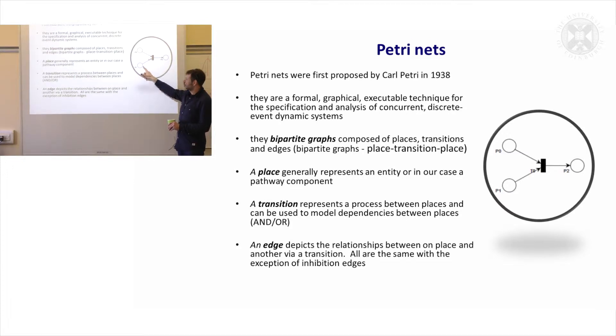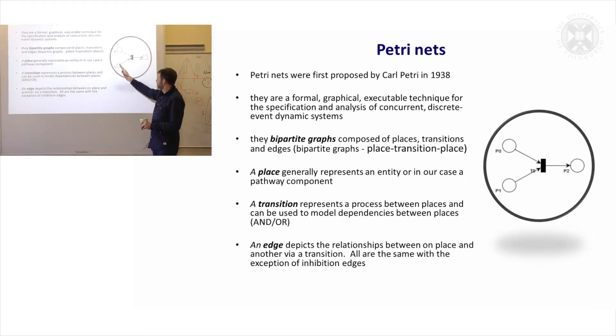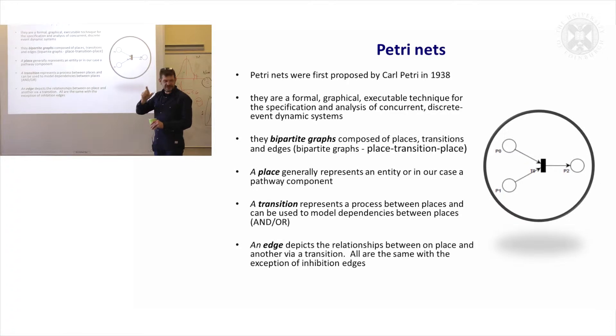These are things called bipartite graphs. So a bipartite graph is something where you must have place, transition, place, place, transition, place. That is the structure of it. It's bipartite. Everything must alternate in the way that it works.